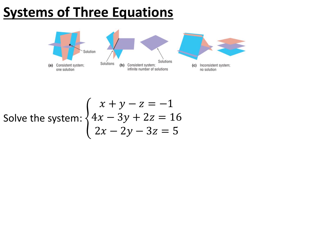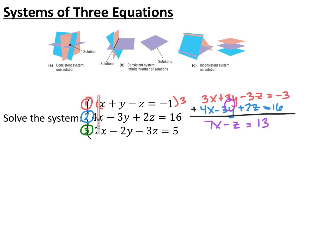We take both solved values and plug them into any of the three original equations to solve for the third variable. The first thing is to pick one variable to eliminate from two different pairs — sometimes there's an easiest choice, sometimes not. I'm going to choose y because one pair already has opposite signs, making it easy.